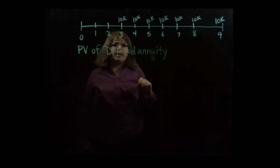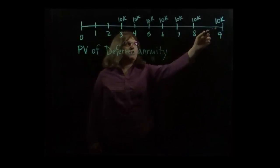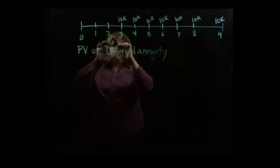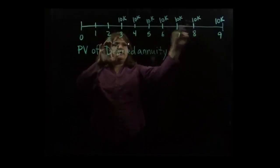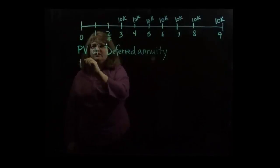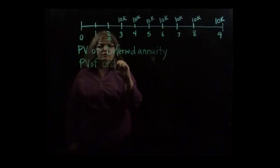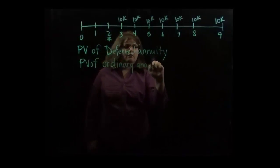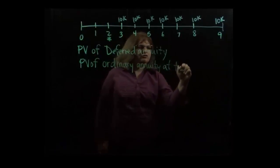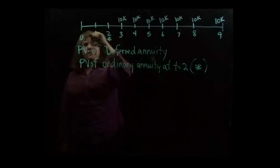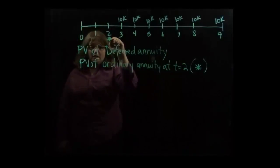And to figure out the present value of that, we're going to have to do it in two steps. Because the first thing we'll have to do is discount all of these payments back to here, at which point this is an ordinary annuity. When our first payment starts at the end of the first period, then it's considered an ordinary annuity. And then we can discount that back, the two periods, as a single amount.